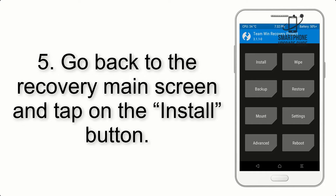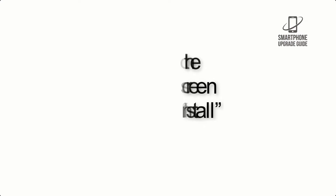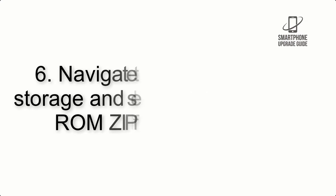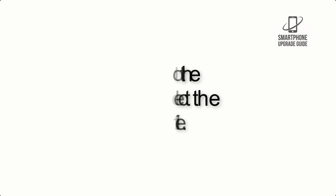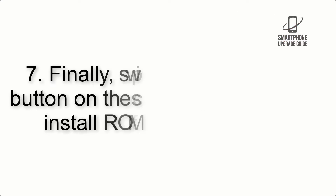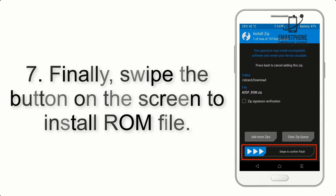Step 5: Go back to the recovery main screen and tap on the Install button. Step 6: Navigate to the storage and select the ROM zip file.